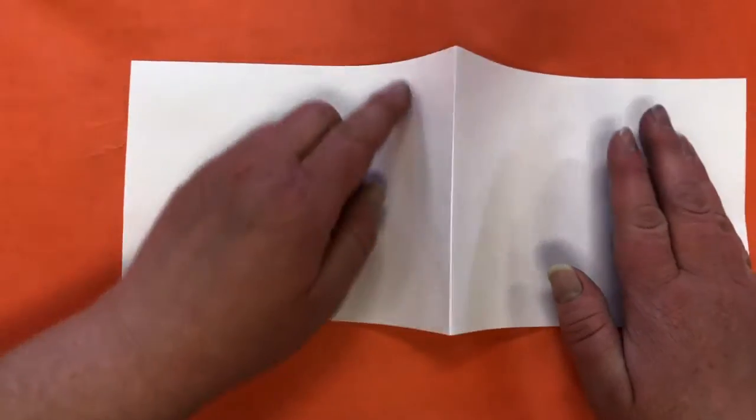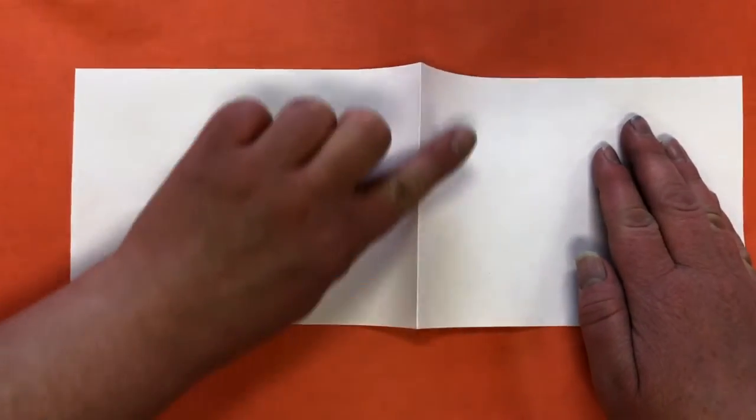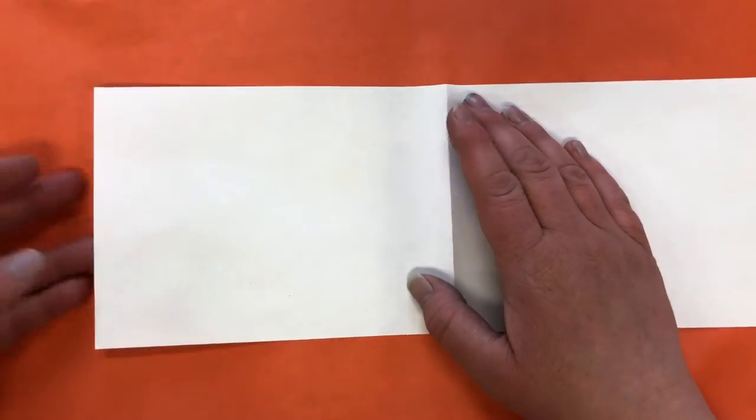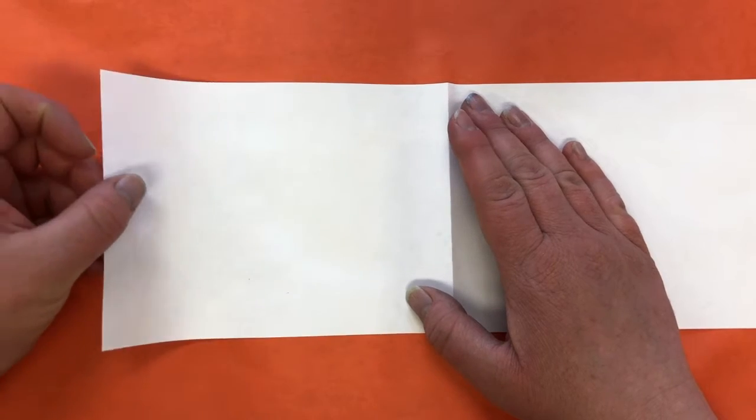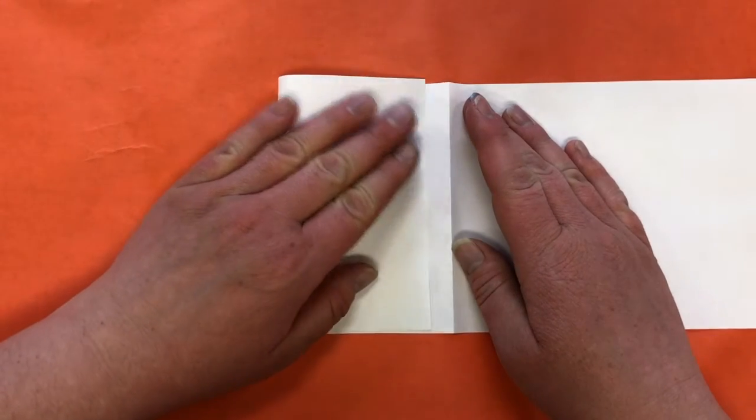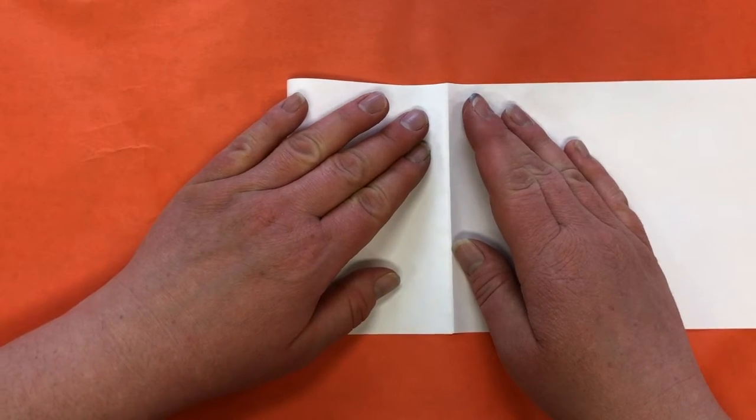So now I folded it in half. Now I'm going to open it up so that fold is on top, and what I'm going to do is I'm going to take my left side and line it up with the fold.